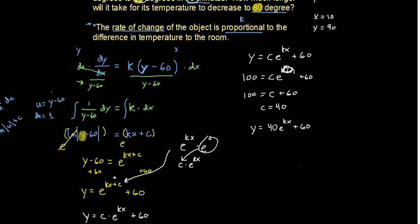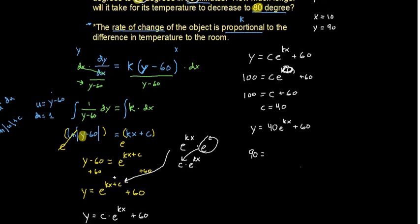So 90 equals 40 times e to the 10x plus 60. Subtract 60 from both sides and divide by 40. And you will get three-fourths, it looks like, equals e to the 10k.